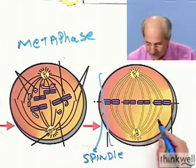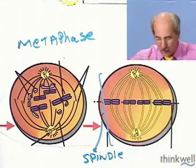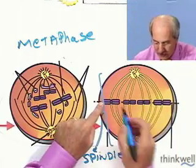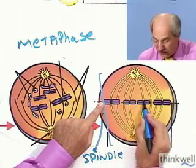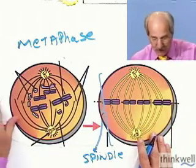And in fact, we refer to this so-called equator, or this imaginary line across there where the centromeres indeed are lined up, we call that the metaphase plate. So that's going to be called the metaphase plate, that imaginary line, if you will, where they're all lined up.